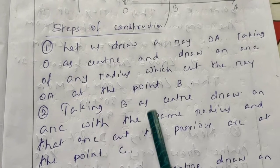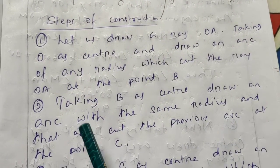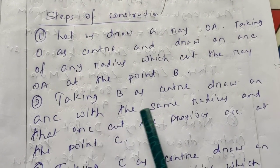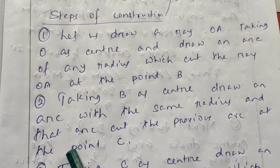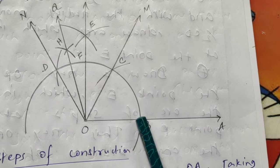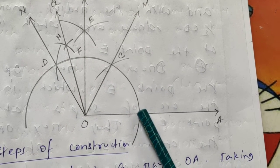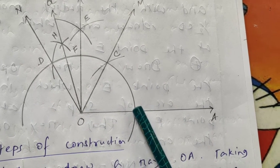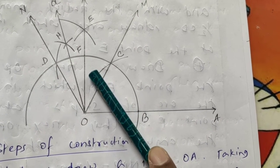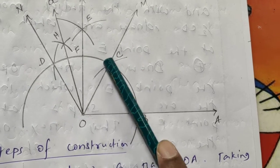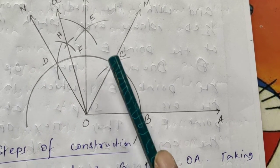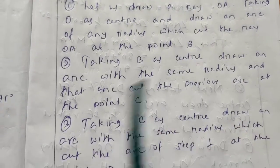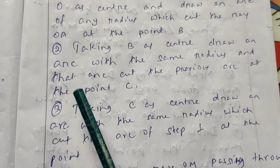Step two: taking B as center, draw an arc with the same radius. That arc cuts the previous arc at the point C.